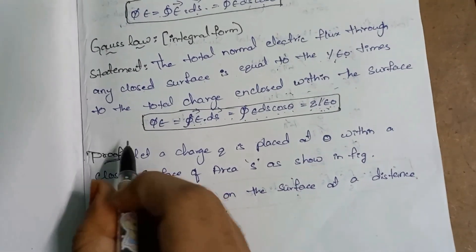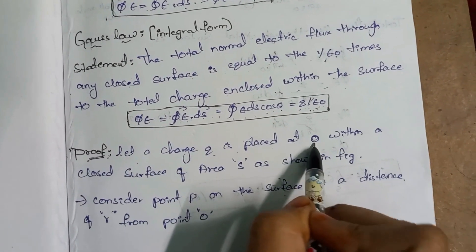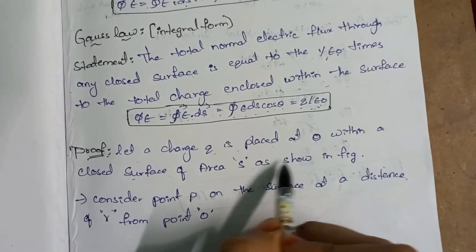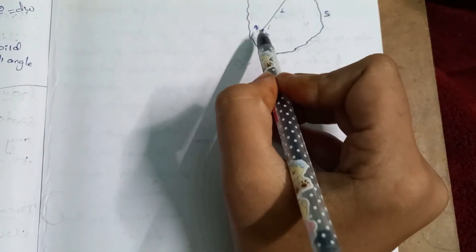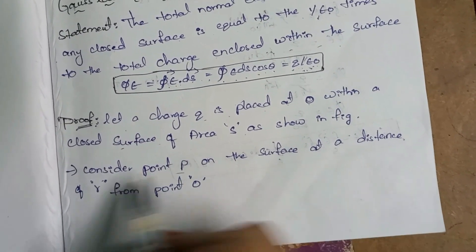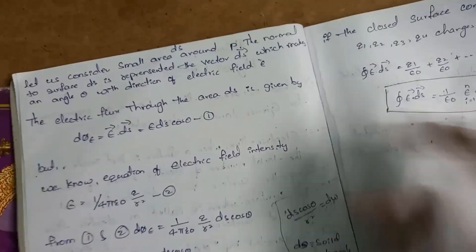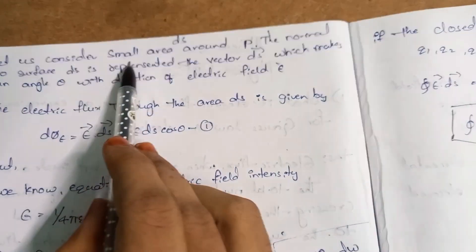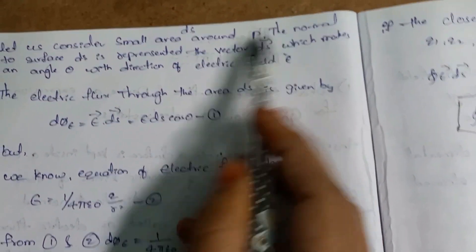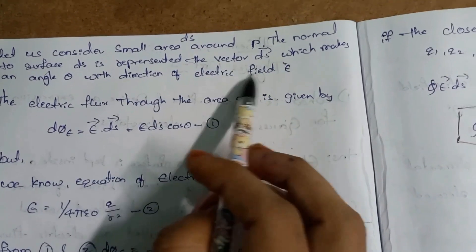We have a closed spherical surface with surface area S as shown in the figure. Consider a charge Q at center O. Consider a point P on the surface at a distance r from point O. Let us consider a small area ds around P. The normal to the surface ds is represented as a vector ds, which makes an angle theta with the direction of electric field E.